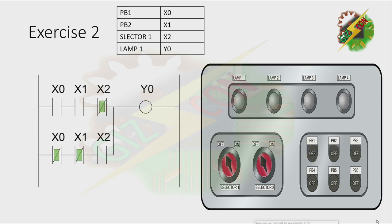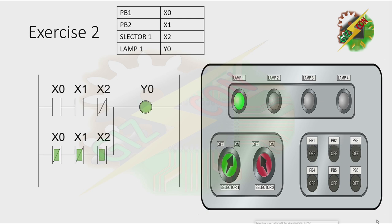Now let's turn on the selector switch — lamp 1 is initially on. When I press PB1, lamp 1 turns off. When I press PB2, lamp 1 turns off also. And when I press both push buttons, lamp 1 turns off as well. That's how we solve Exercise 2. Now let's go to Exercise 3.